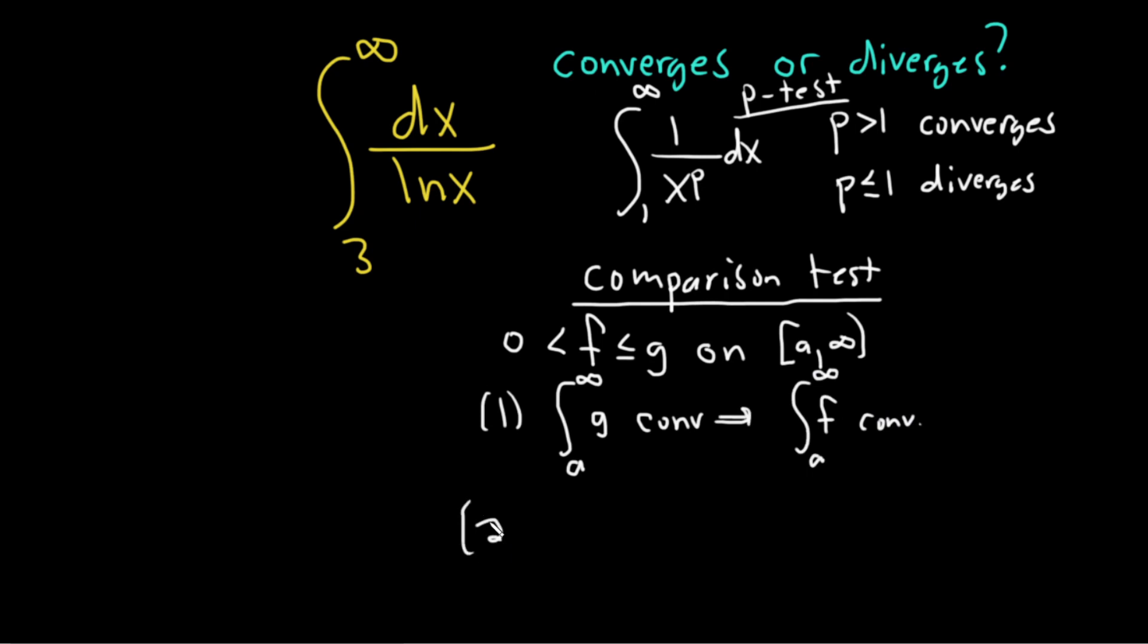And this should make sense intuitively. If you think about just a simple graph, let's say this is the graph of g, and then we know that f is smaller than g. Well, if g converges, it has to have a finite area, right?